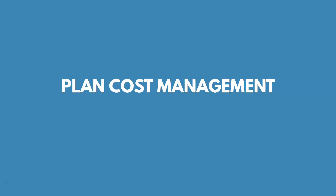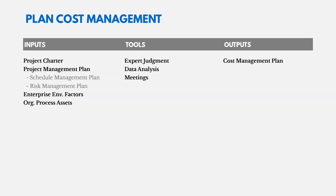Let's look at the first process, plan cost management — documenting how to estimate and control costs. Here are the ITTOs. We have our project charter coming in because it might have some high-level cost information. Then our project management plan, which includes our schedule management plan and our risk management plan. In these plan processes, the project management plan is always an input, and individual plans are an output — in this case, the cost management plan.